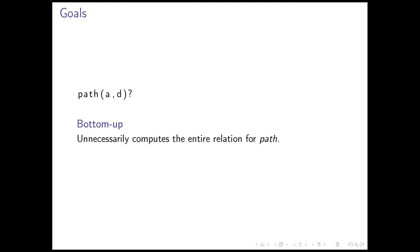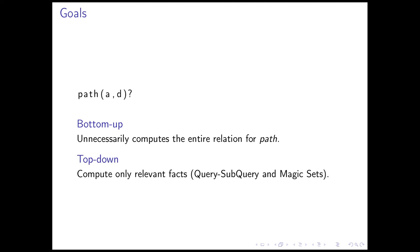Something which is a bit weird: we never talked about goals, and the bottom-up evaluation algorithm evaluates the entire IDB relations. If we have a goal like path AD, we are not interested in the entire relation path — we just want to know if AD is in the relation path. These bottom-up evaluation algorithms — naive and semi-naive — are a bit inefficient because they unnecessarily compute a lot of things. Another way of doing this is with top-down evaluation. One algorithm for top-down evaluation is the query-subquery algorithm, very similar to the resolution we saw for general logic programming, but working on relations instead of individual tuples.